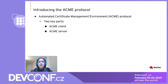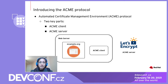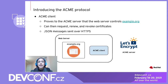There are two key parts to the ACME protocol: an ACME client and an ACME server. An ACME server is a Certificate Authority capable of issuing signed certificates automatically — Let's Encrypt is an example. An ACME client typically runs on a web server and proves to the ACME server that the web server really does control the domain name it wants to obtain a certificate for — in this example, example.org.